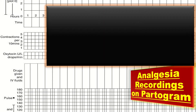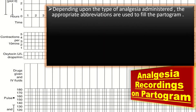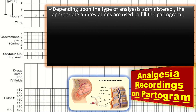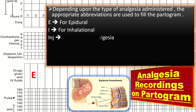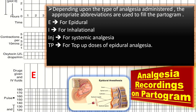For analgesia recording on the partogram, depending upon the type of analgesia administered, appropriate abbreviations are used: E for epidural, I for inhalational, INJ for systemic analgesia, and TP for top-up dose of epidural analgesia. The time of administration of analgesia is also noted.